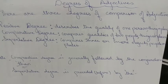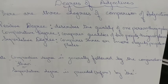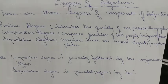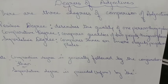We have three degrees of adjectives. Three degrees of comparison: positive degree, which describes the quality of one person, thing, or place; comparative degree, which compares the quality of two people, things, or places; and superlative degree, which compares three or more objects, people, or places together.